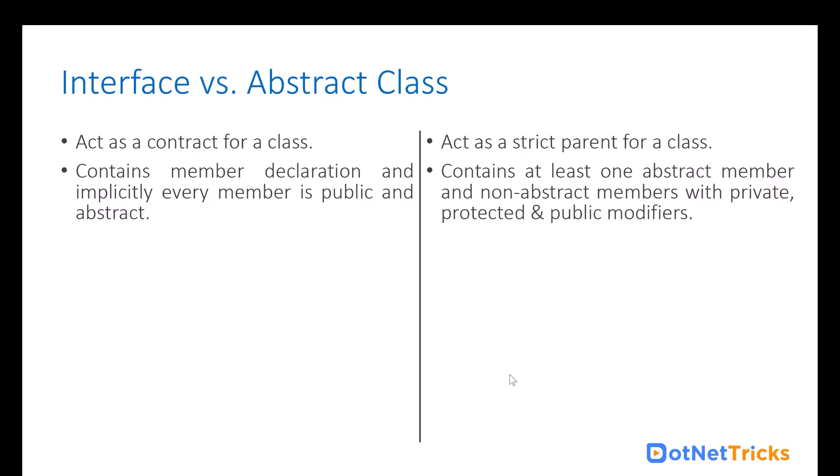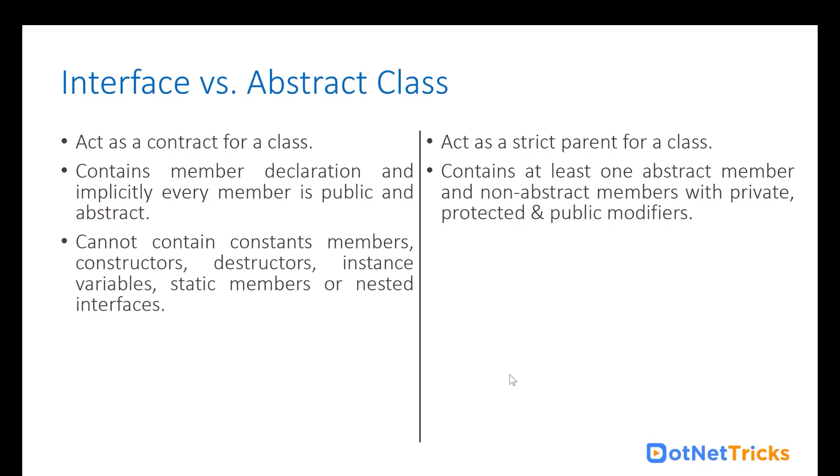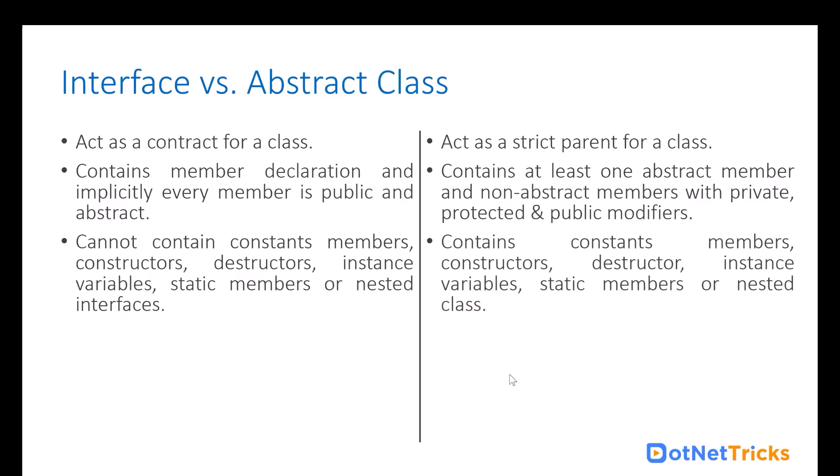In the interface, we cannot have constant members, constructors, destructors, instance variables, static members, or even nested interfaces. These things are not possible at the interface level. But in an abstract class, we can have constant members, constructors, destructors, instance variables, static members, and nested classes as well. We have constructor support in abstract class because we can inherit it in the derived class. But we cannot create an interface object, so a constructor is not required there. Also, interface never acts as a parent, so there is no inheritance between interface and the class.